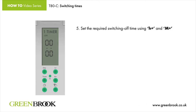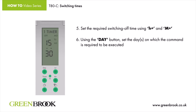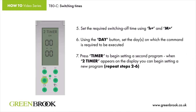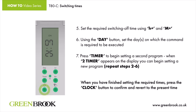5. Set the required switching off time using H Plus and M Plus. 6. Using the Day button, set the days on which the command is required to be executed. 7. Press timer to begin setting a second program. When '2 timer' appears on the display, you can begin setting a new program. Repeat steps 2 to 6. When you have finished setting the required times, press the clock button to confirm and revert to the present time.